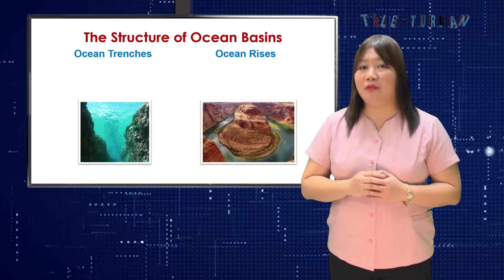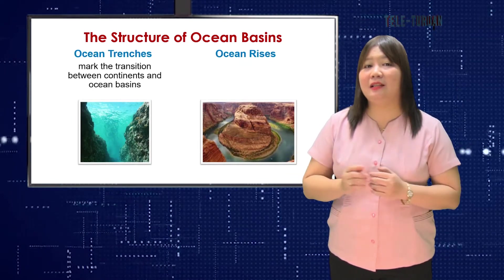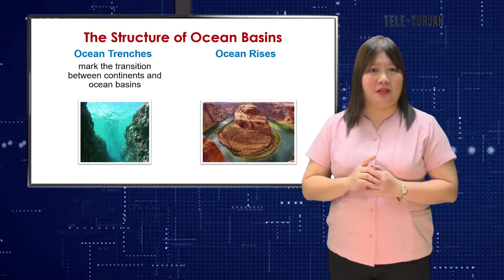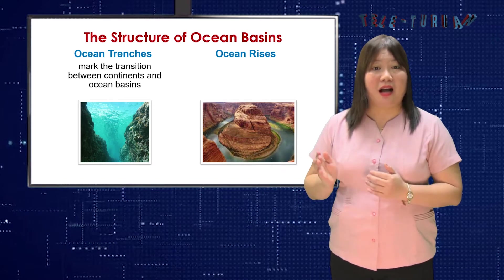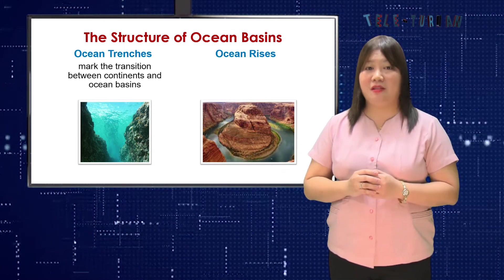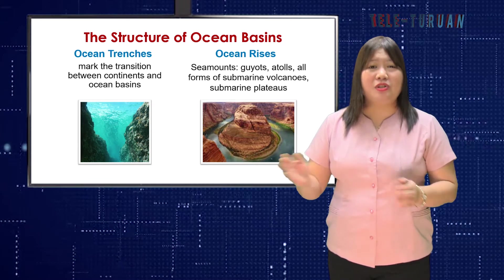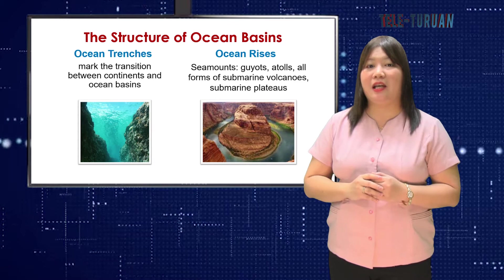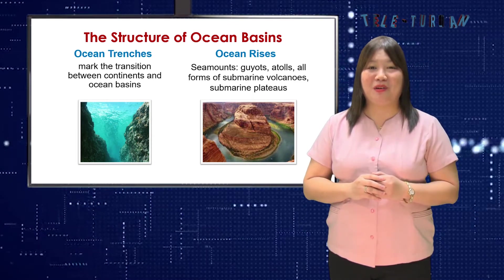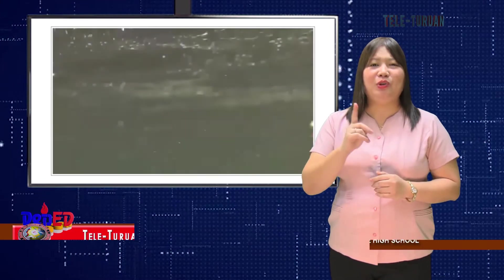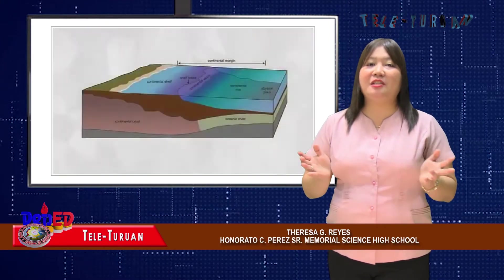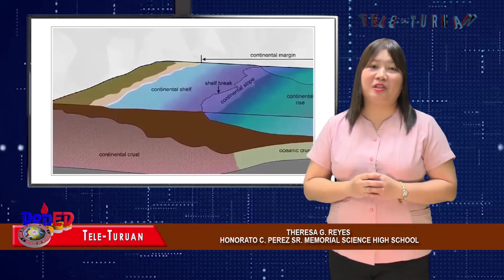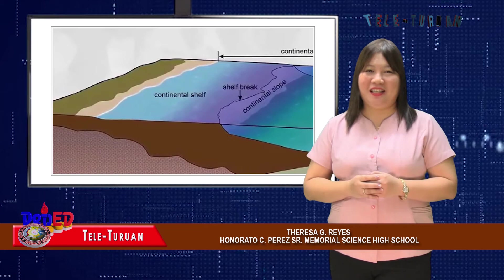Ocean trenches are long, narrow, steep-sided depressions found on the ocean floor that contain the greatest depths in the ocean. They mark the transition between continents and ocean basins, especially in the Pacific Basin. Ocean rises include seamounts such as guyots, atolls, and all forms of submarine volcanoes and submarine plateaus. Now you know that ocean basins are the largest depressions on Earth. Stay tuned as we continue with the evolution of ocean basins after the break.